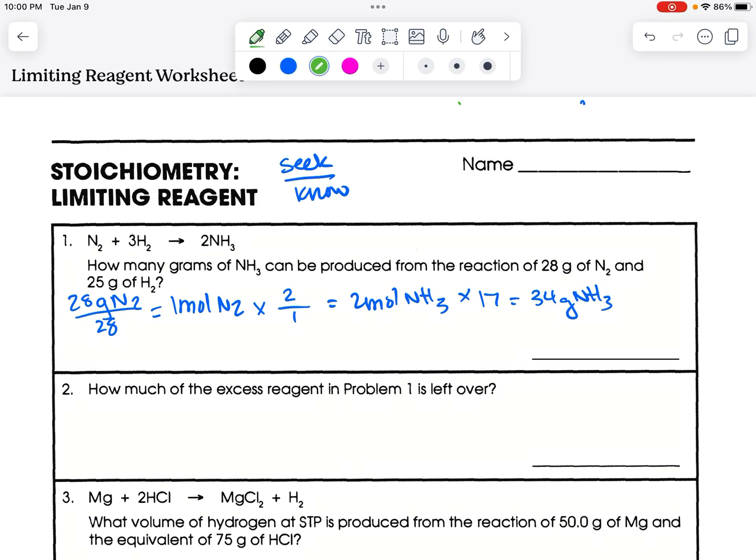So we also had 25 grams of H2, that's a 2, divided by GFM, which is 2. So we have 12.5 moles H2. So we have a different conversion factor. We still seek NH3, but this time we started with hydrogen. So 12.5 times 2 divided by 3 is 8.33 repeating moles NH3 times the GFM, which is 17, and that's going to give you 141.7 grams NH3.